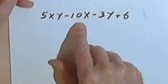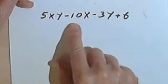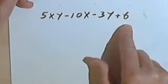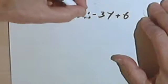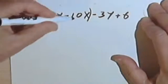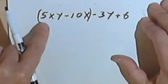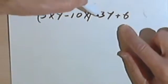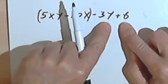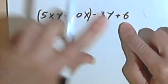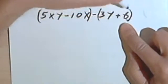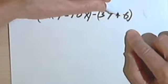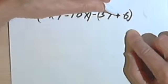I've got 5xy minus 10x minus 3y plus 6. So I can put parentheses around the first two terms, and they'll factor out pretty nicely. You can see I can take a 5 and an x out of this. But if I put parentheses around the second two terms, you'll realize what I'm doing. Parentheses over here would basically take this positive 6 and turn it into a negative 6.